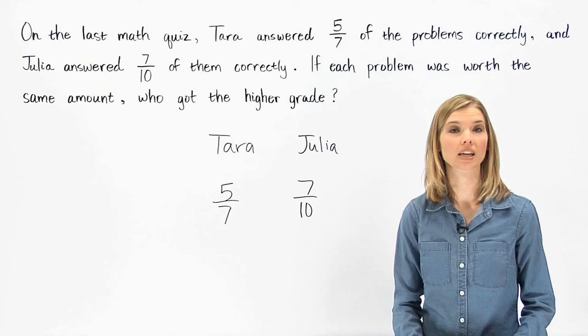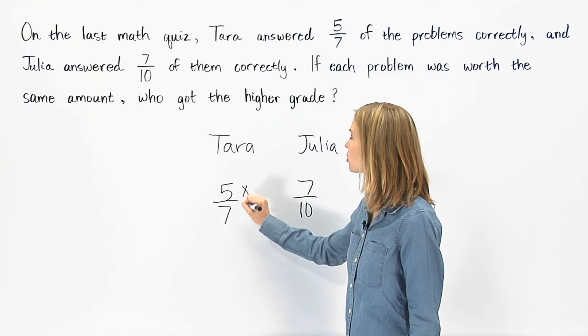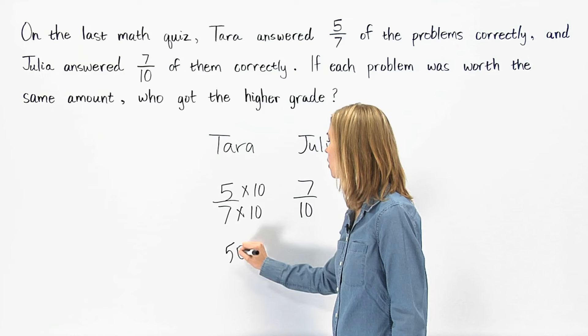To get seventy in the denominator of five-sevenths, we multiply the numerator and denominator by ten to get fifty over seventy.